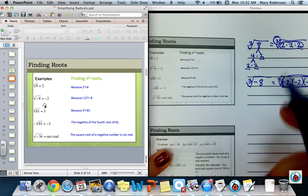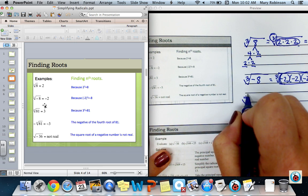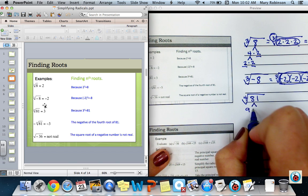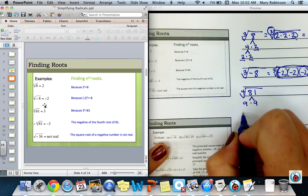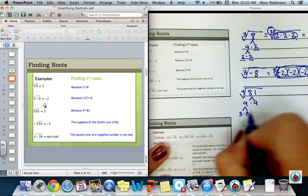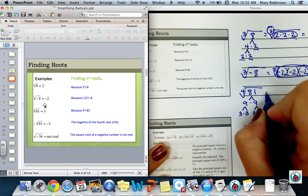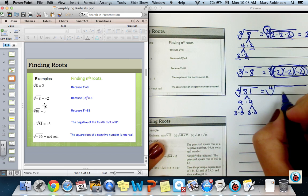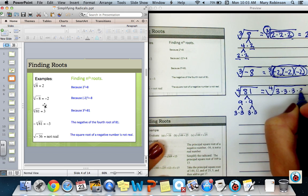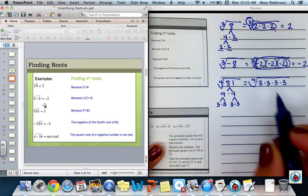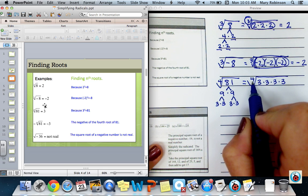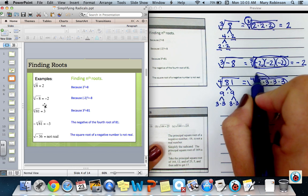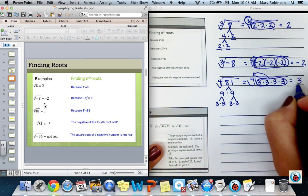The fourth root of 81, 81 breaks down to 9 times 9, which further breaks down to 3 times 3 and 3 times 3. I can now rewrite this with the prime factorization of 3 times 3 times 3 times 3. Because I am looking for groups of 4 of the same factor, because my index is 4, I'll circle these 4 and they come out as 1, 3.